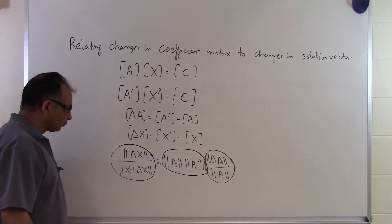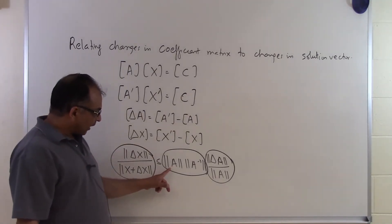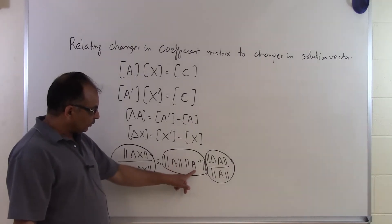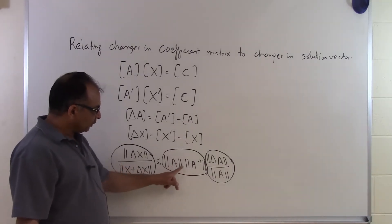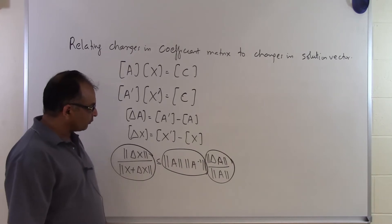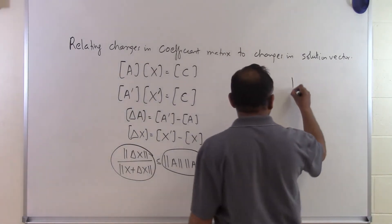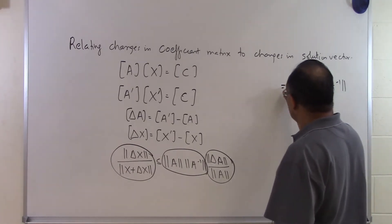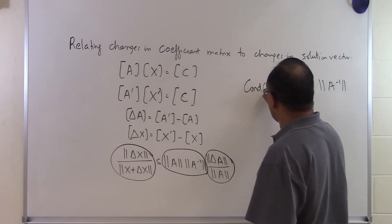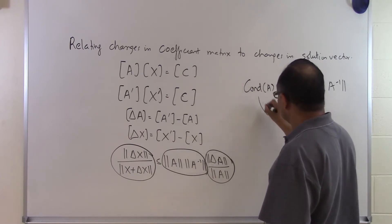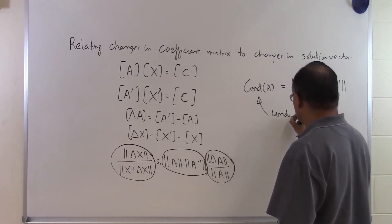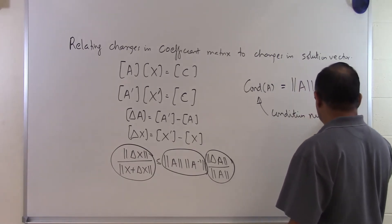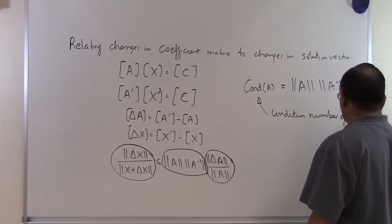The amplification factor is found by taking the norm of the coefficient matrix, taking its inverse and finding the norm of that, and then multiplying the two — giving norm of A times norm of A inverse. This quantity, norm of A times norm of A inverse, is actually defined as the condition number of the A matrix.